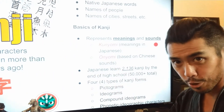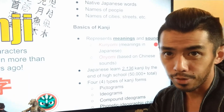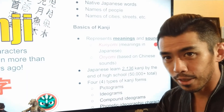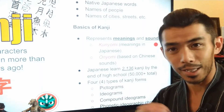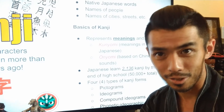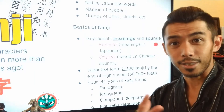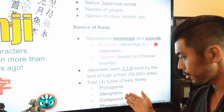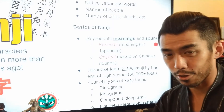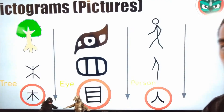The average Japanese person learns about 2,136 kanji by the end of high school. There are approximately 50,000 or more kanji in total based on classic Japanese dictionaries, but of course most Japanese people don't know 50,000 kanji. There are four types of kanji forms: pictograms, ideograms, compound ideograms, and phonetic ideographic characters.